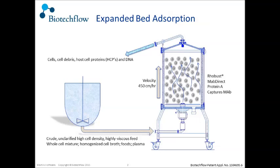On this slide, you can see this expanded bed chromatography column is different to what you might see if you looked up papers on Streamline and the GE Streamline columns. You'll notice there isn't a piston in the production scale. First I'll explain expanded bed, or EBA. We take from a 5,000 or 10,000 litre fermenter the whole cells in this particular study. The monoclonal antibody, the MAB, is secreted into the supernatant.